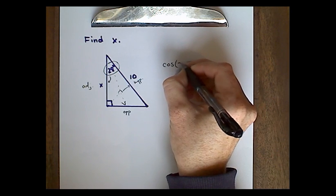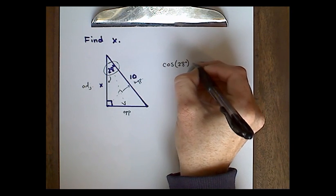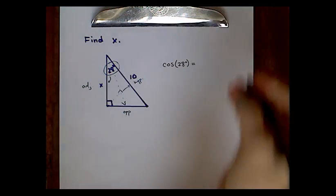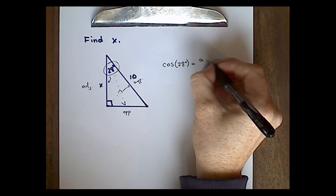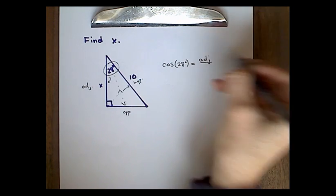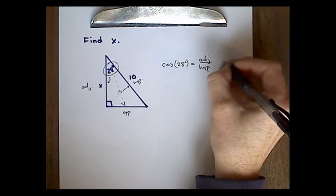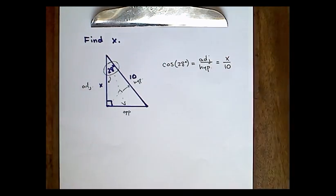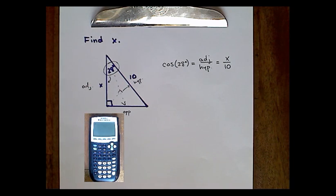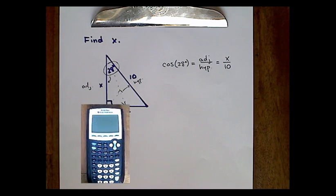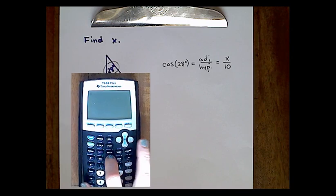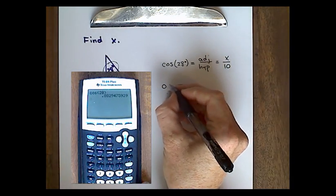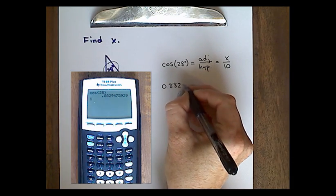The cosine of the angle equals the adjacent leg over the hypotenuse. Setting up this ratio and plugging in the values from the diagram, we get x over 10. To find what x over 10 should equal, we go to the calculator and type in cos 28, which gives us 0.882947529.